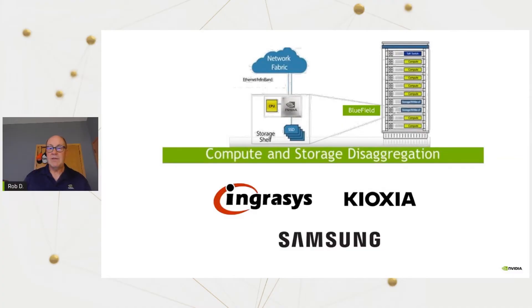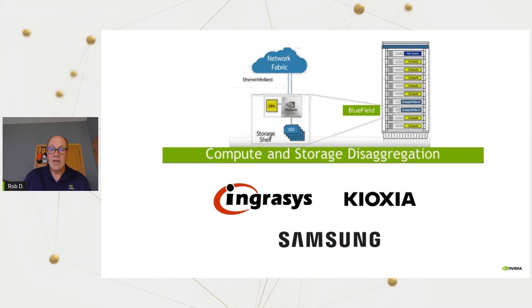The NVMe over Fabrics use case called compute storage disaggregation was really enabled by NVMe over Fabrics. This is because of the extremely close, and in some cases better than local NVMe performance you can get with NVMe over Fabrics on Ethernet, and because of Ethernet's economical cost points. And to make compute storage disaggregation even better, you can use Bluefield's Snap offload we talked about earlier.